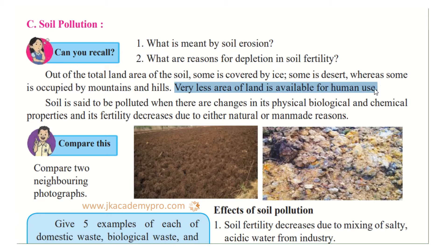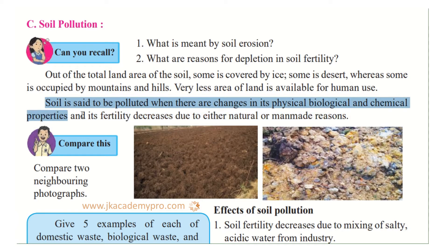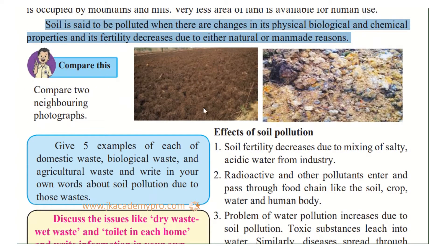Soil is said to be polluted when there are changes in its physical, biological, and chemical properties and its fertility decreases due to either natural or man-made reasons. So soil pollution occurs by biological or chemical — that is man-made or natural — means. Anything that decreases the fertility of the soil is called soil pollution.